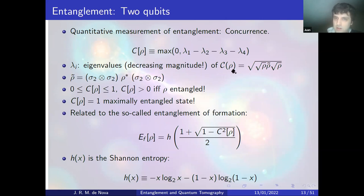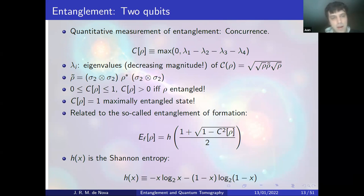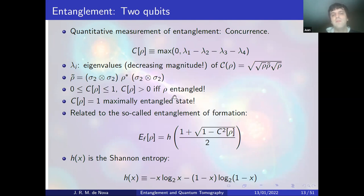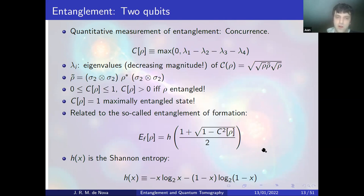A more quantitative measure of entanglement is provided by the concurrence C(ρ), defined as max(0, λ₁ - λ₂ - λ₃ - λ₄) where the λᵢ are eigenvalues of the matrix ρ(σy ⊗ σy)ρ*(σy ⊗ σy). The concurrence is a positive function ranging between 0 and 1: it is greater than zero if and only if the state is entangled, and equal to 1 for a maximally entangled state. It is related to the entanglement of formation through E = h((1 + √(1-C²))/2), where h is the binary entropy.